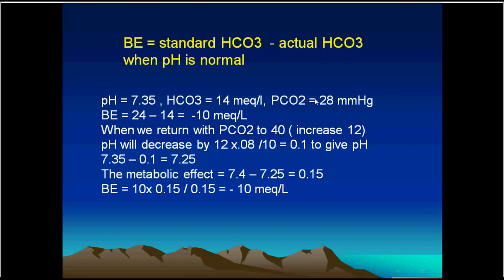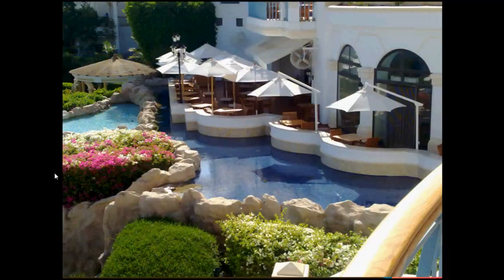If you restore carbon dioxide back to 40, the pH will drop by 0.1 — from 7.35 to 7.25. Then 7.25 is away from 7.4 by 0.15. According to the formula, a 10 mEq change in bicarbonate produces a 0.15 change in pH, so the base excess in this case is minus 10 mEq, or the base deficit is 10 mEq. You can apply this formula or these calculations to know how much base excess or base deficit is present.